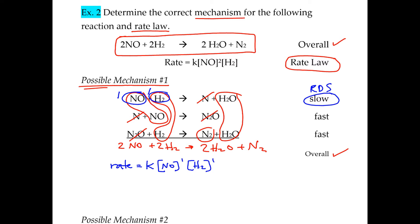NO is one of the original reactants and H2 is one of the originals, so the rate law based on mechanism 1 is complete. The problem is that this does not match the given rate law up here — the given rate law has NO to the second power, but this one only has first power. So mechanism 1 is not right; that second step cannot be the slow step under mechanism 1.